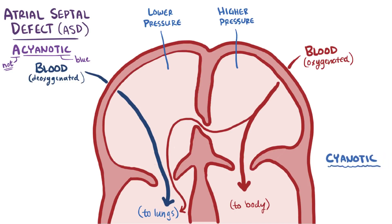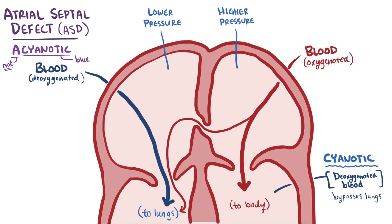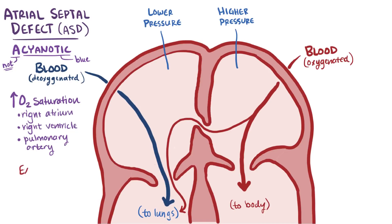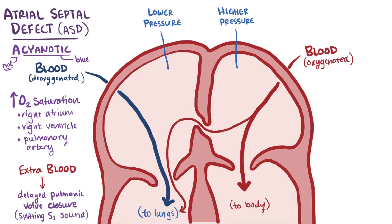In contrast, a cyanotic heart defect allows deoxygenated blood to bypass the lungs and make it out to the body, causing a blue or purplish discoloration of the skin, which is not the case here. That being the case, you'll see an increase in oxygen saturation of the blood in the right atrium, the right ventricle, and the pulmonary artery. This extra blood volume passing by the pulmonic valve also causes a delay in the closure of the pulmonic valve relative to the aortic valve closure. This slight delay can be heard via auscultation as a splitting of the S2 sound, as well as a systolic murmur in some cases.